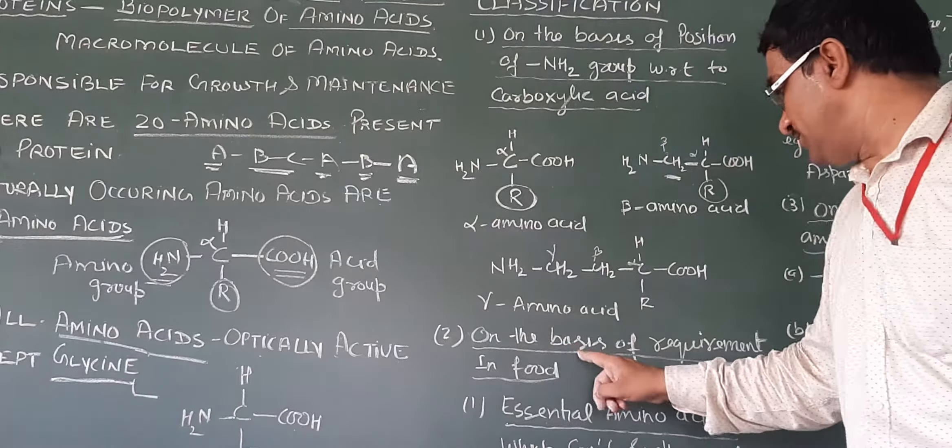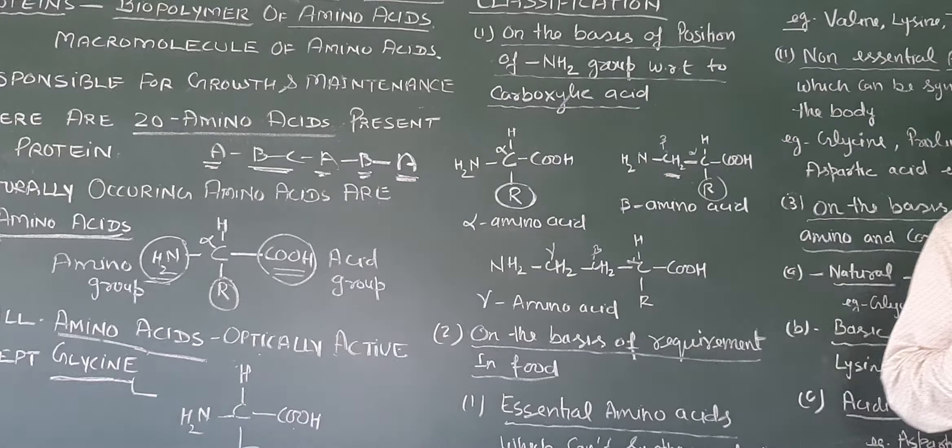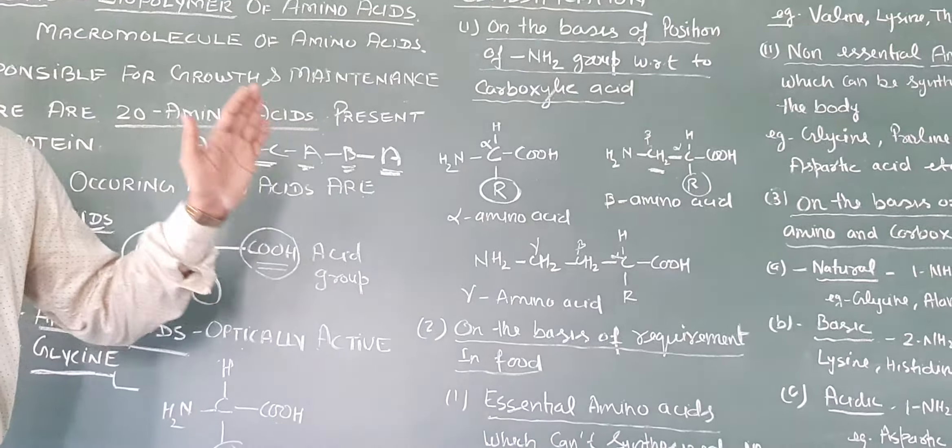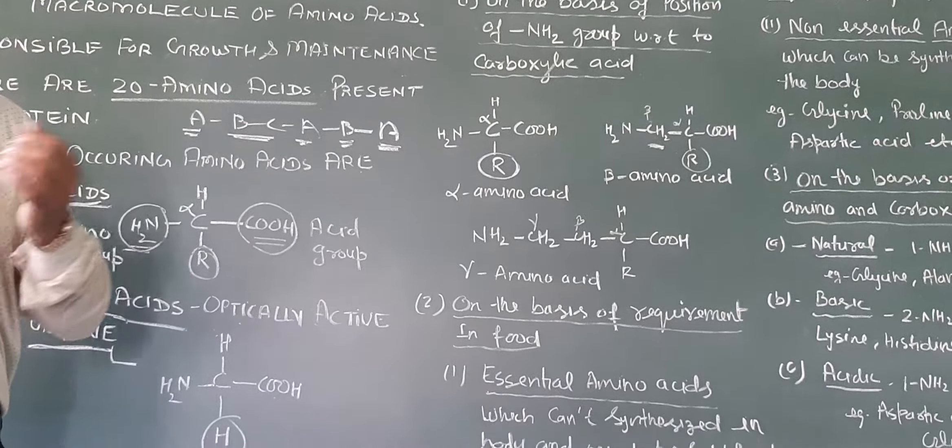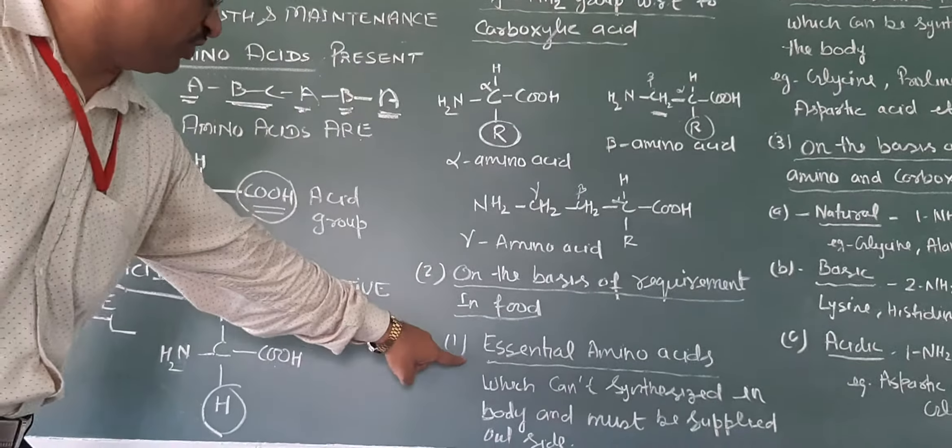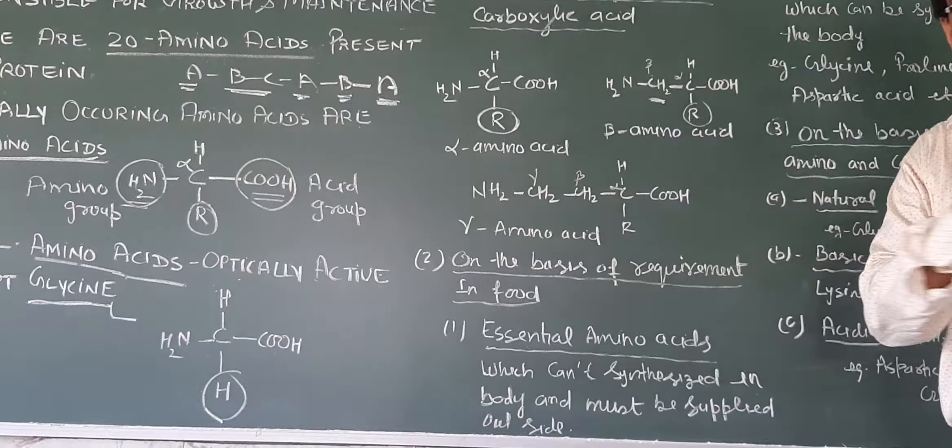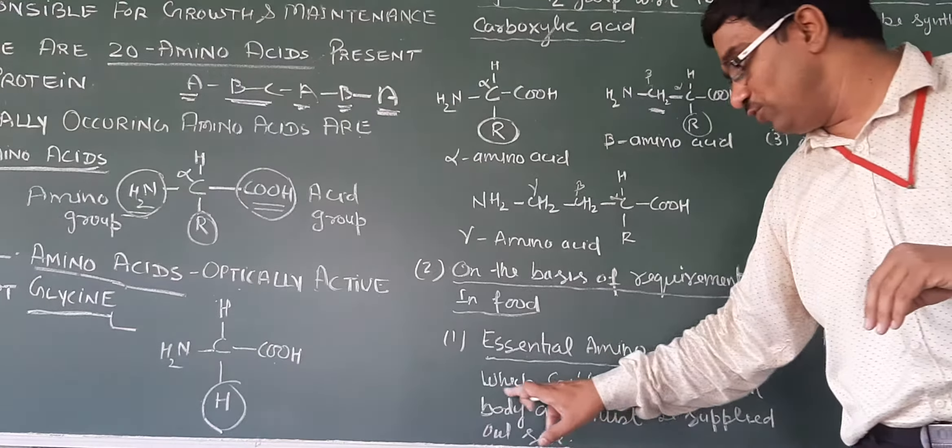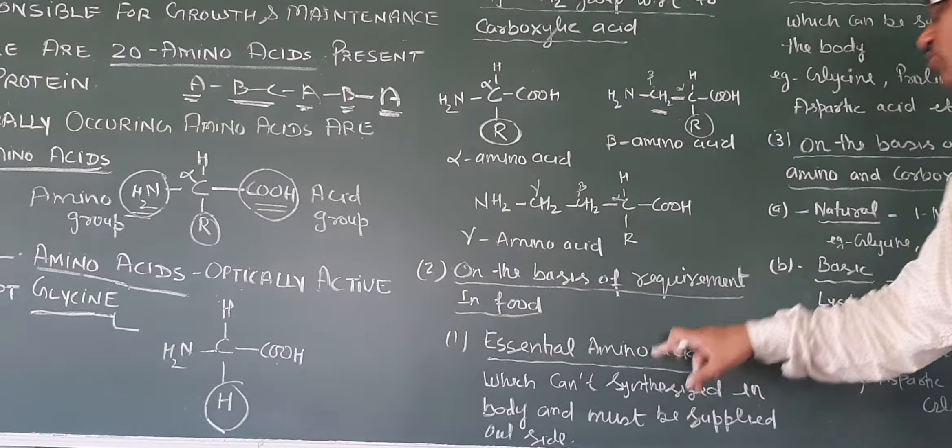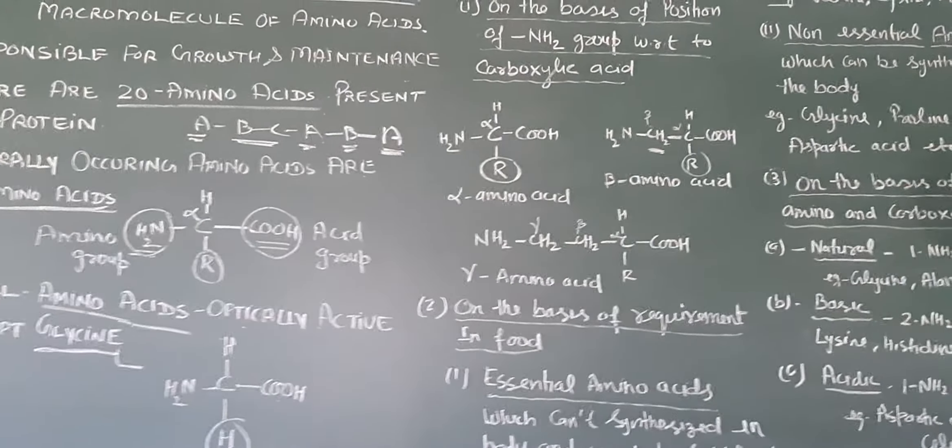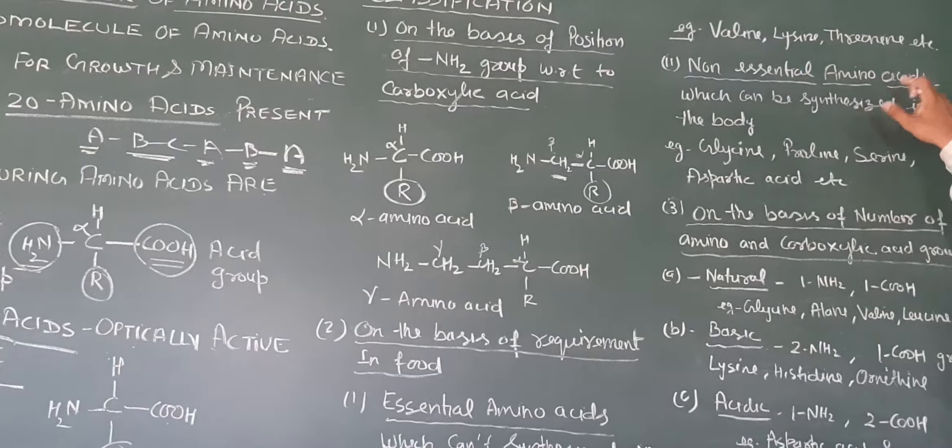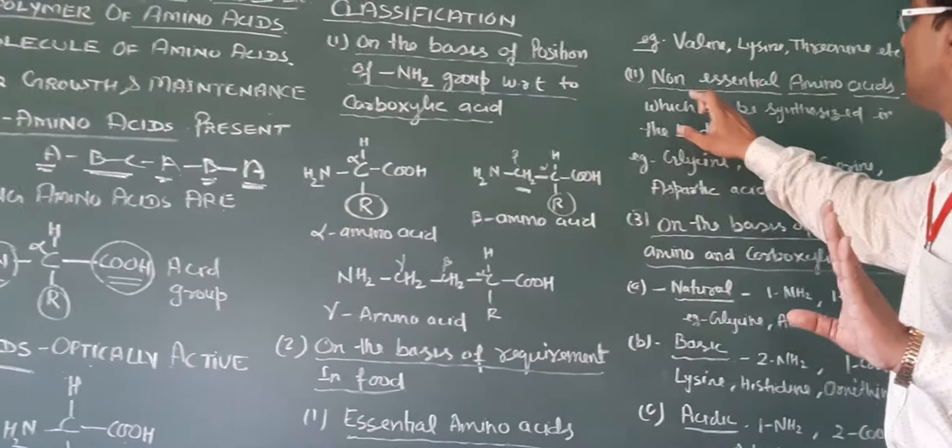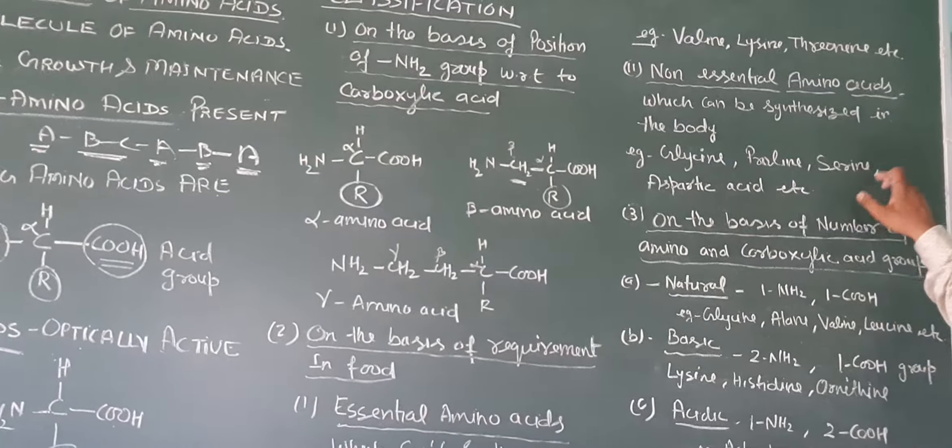Second classification, on the basis of requirements in food. Some amino acids our body can synthesize, others it cannot. Essential amino acids cannot be synthesized in the body and must be supplied from outside through food. Examples include valine, lysine, and threonine. Non-essential amino acids can be synthesized in the body, such as proline, serine, and aspartic acid.